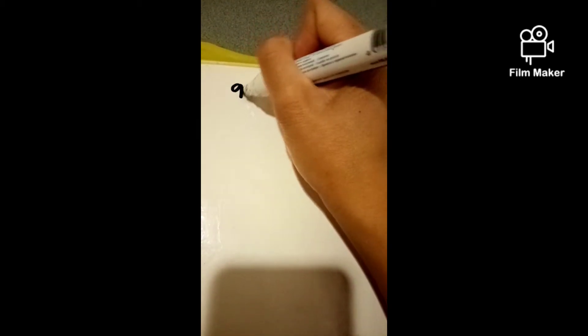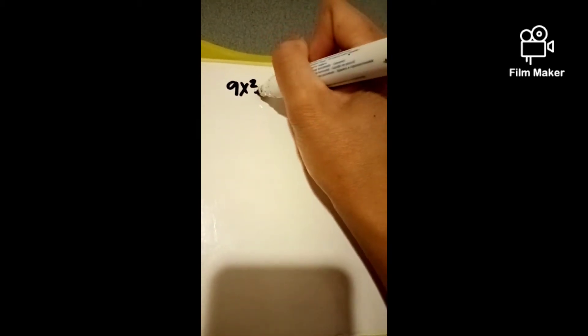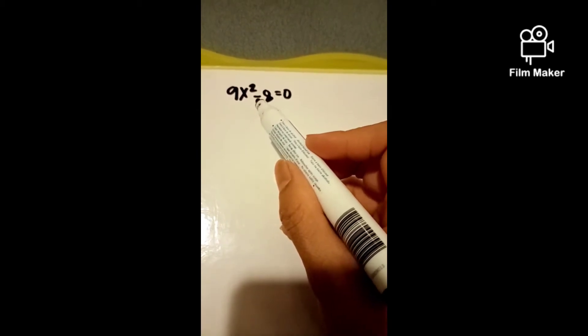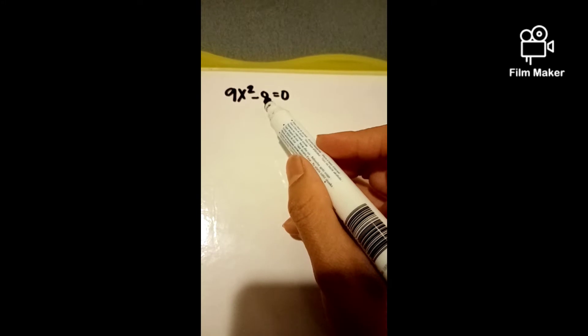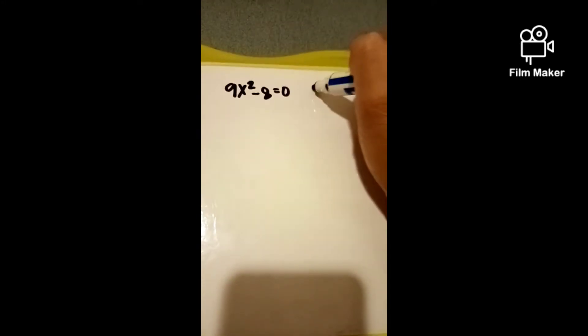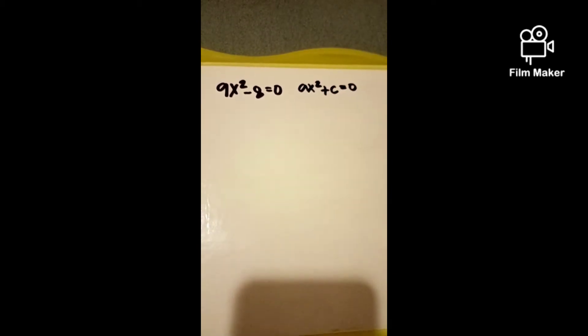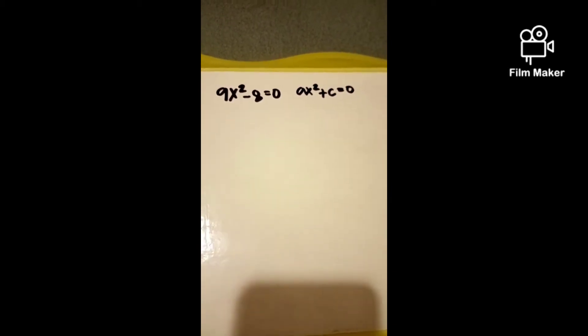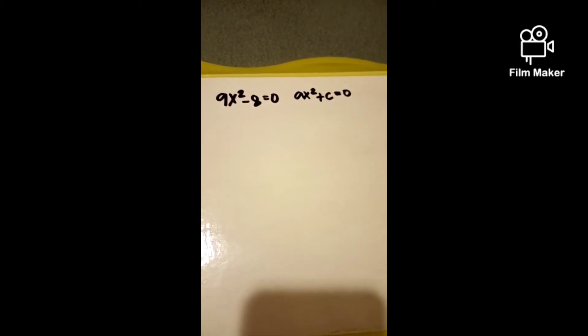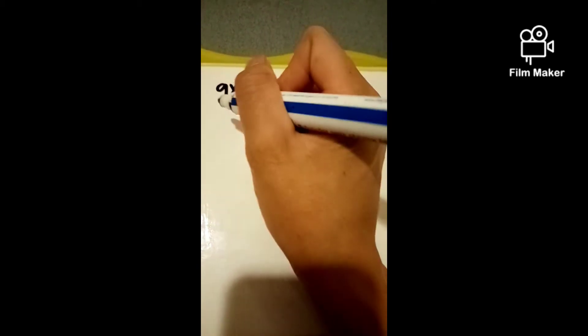I will give you an example: 9x squared minus 8 equals zero. Notice that the quadratic expression on the left does not factor. However, it is in the form of ax squared plus c equals zero, and so we can solve it by extracting the square root. Begin by isolating the x squared.